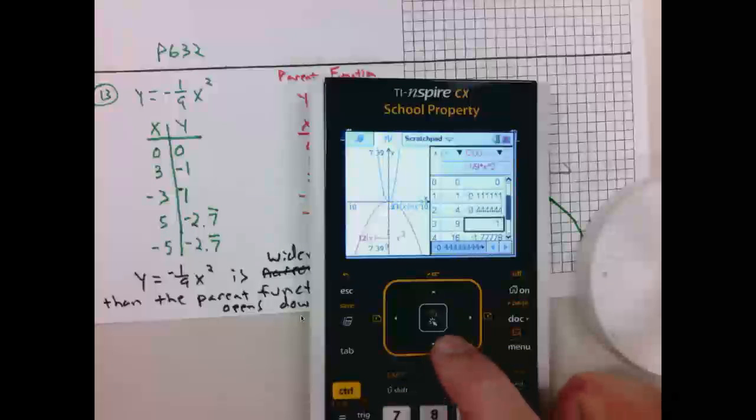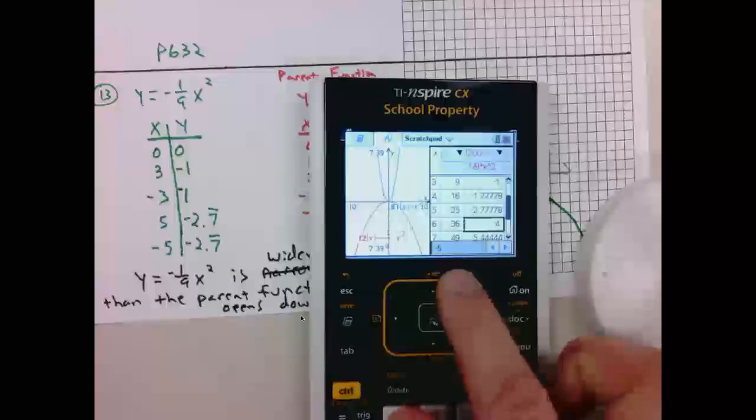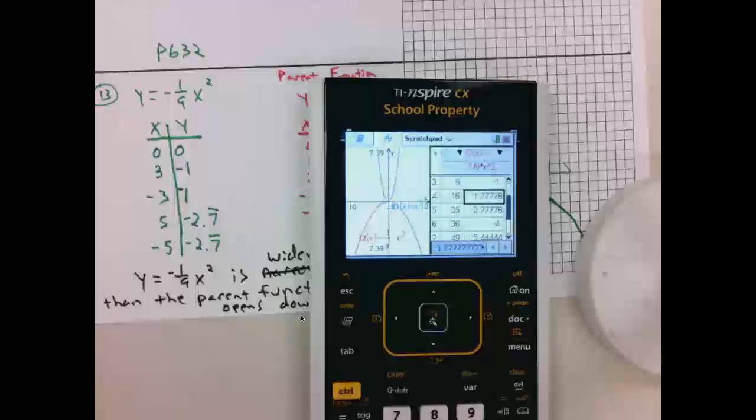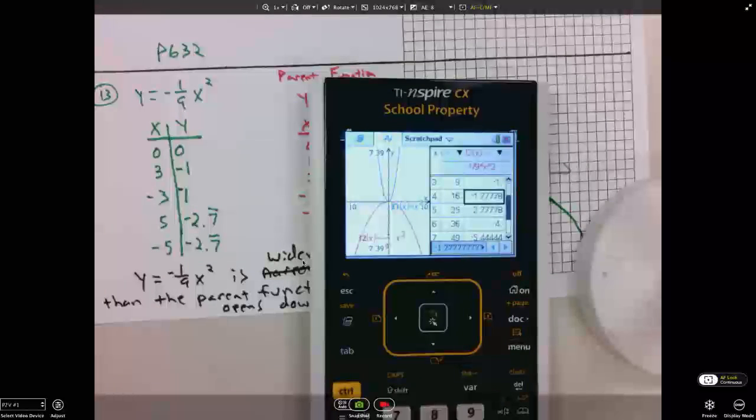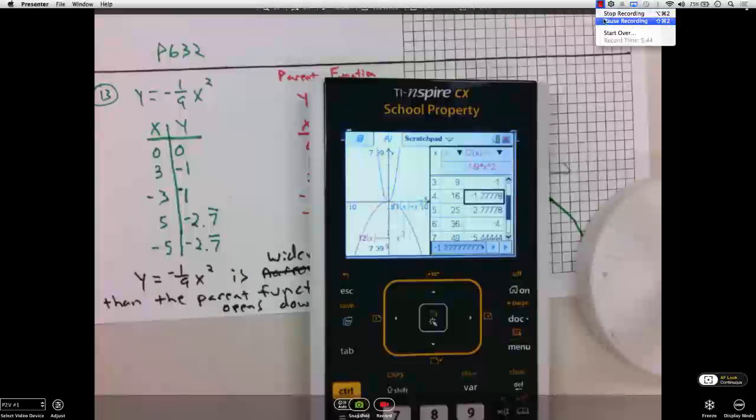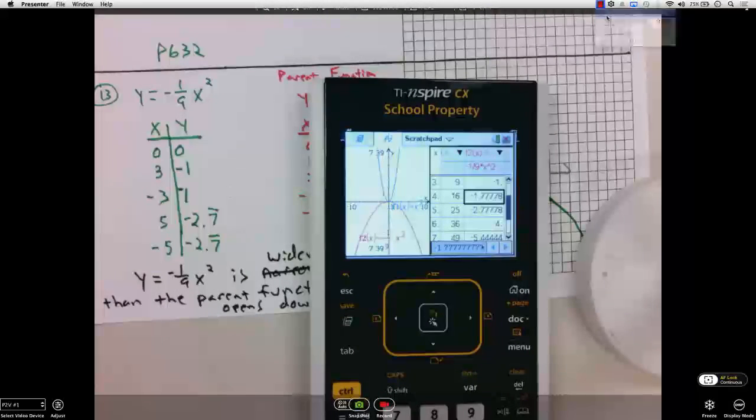Let's come over here and take a look on the table. Three indeed pairs with negative 1, and five pairs with negative 2.7 repeating. Let's watch this new parabola.